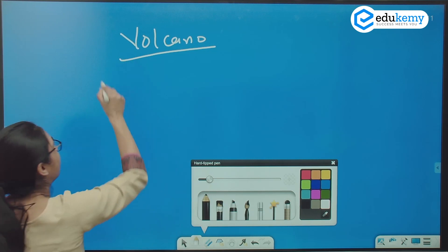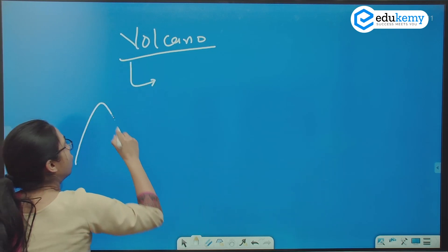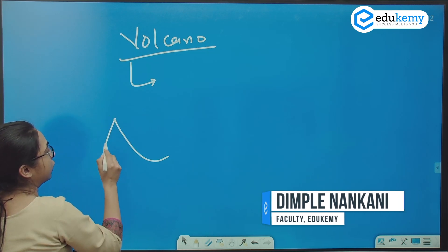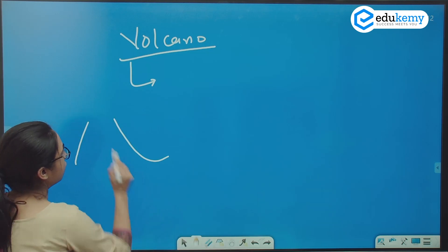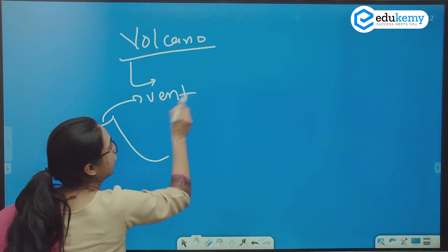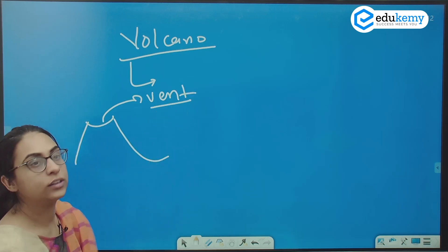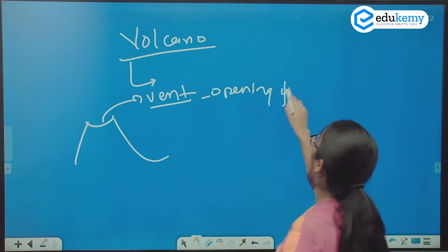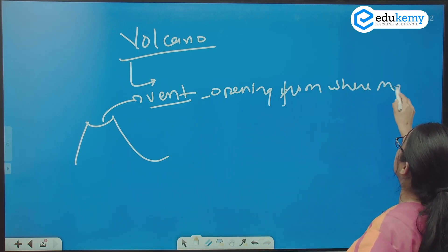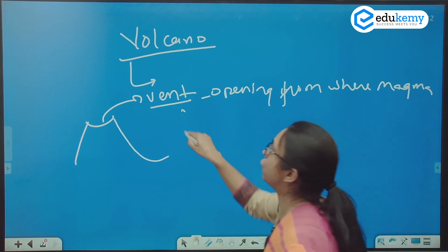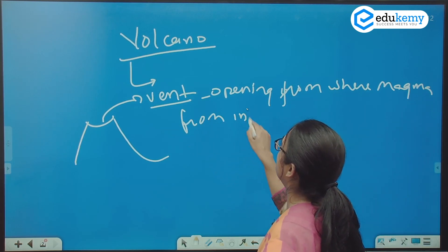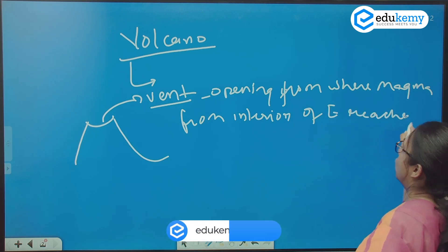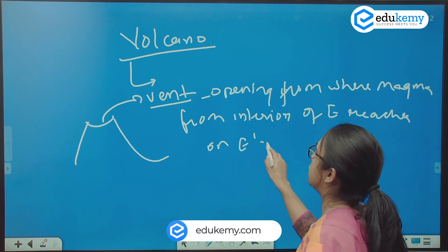So, what is a volcano? Basically, volcano refers to the vent or the opening from where the magma from the interior of the earth reaches on the earth surface.